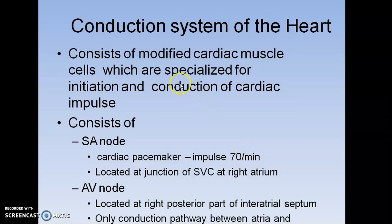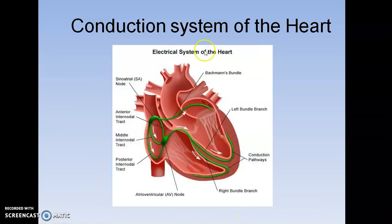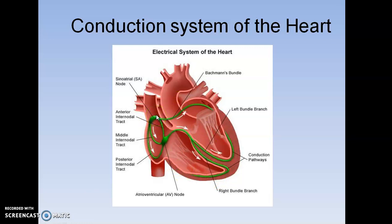The conduction system generally consists of modified cardiac muscles which are specialized for initiation and conduction of cardiac impulses. The SA node is the pacemaker, firing at 70 beats per minute. The impulses travel to the AV node, which is located at the right posterior part of the interatrial septum and is the only conduction pathway between the atria and ventricles. From there, impulses travel through the bundle of His, and then through the Purkinje fibers, completing the conduction system.